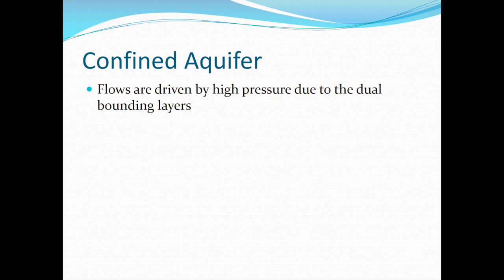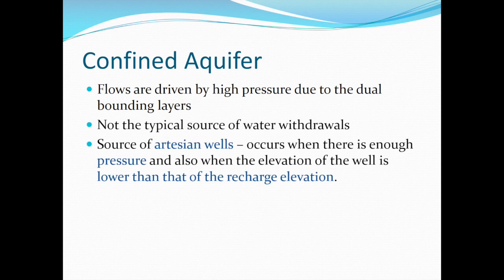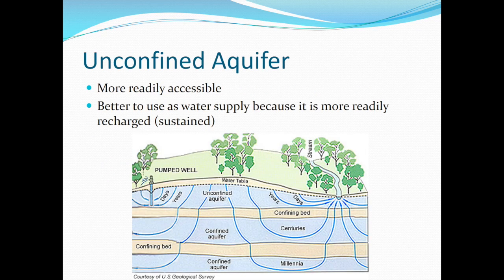Because confined aquifers have two bounding layers, they are highly pressurized. Confined aquifers are not typically the source of water withdrawals, but artesian wells can occur under high pressure and at an elevation lower than the recharge zone. Since confined aquifers are difficult to access, unconfined aquifers are the source of water withdrawals. Not only is it relatively easy to drill a well into an unconfined aquifer and begin pumping, but unconfined aquifers also recharge faster. We can see in this diagram that the unconfined aquifer can recharge in days or years, but confined aquifers can take centuries or even millennia to recharge.